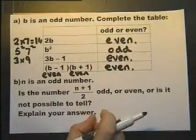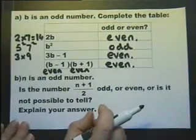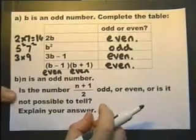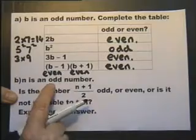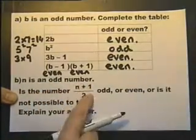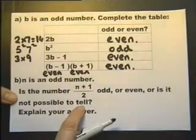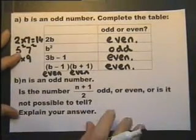Now, as long as we don't go barmy thinking about that question, it's not too bad. Let's look at part B. N is an odd number. Is the number, when you work it out, odd or even? Or is it not even possible to tell? Explain your answer.